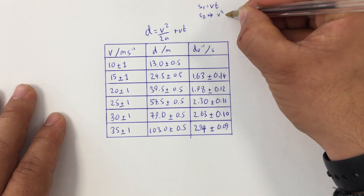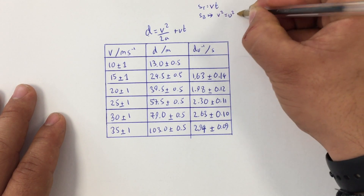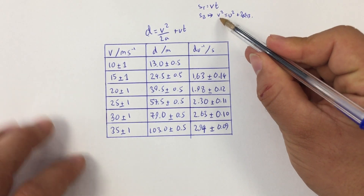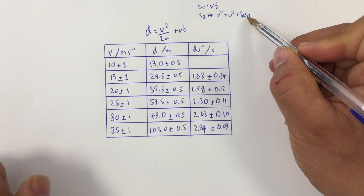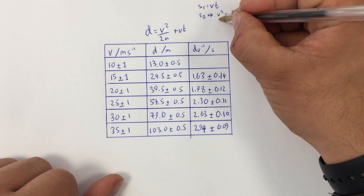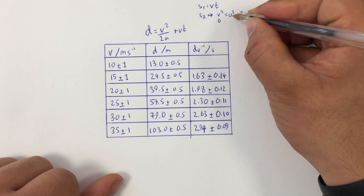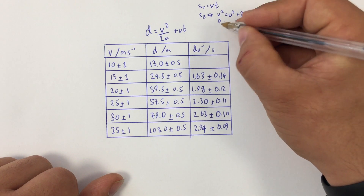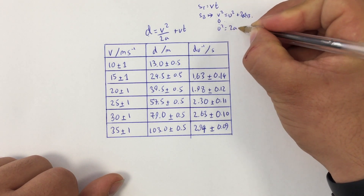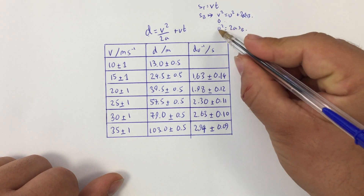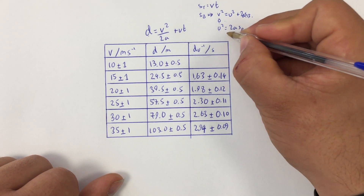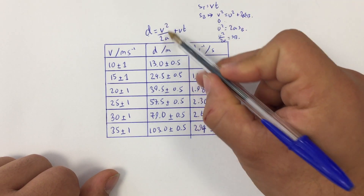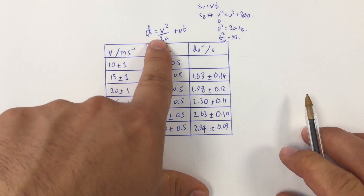I'm going to show you where this comes from in full. This is our SUVAT equation: v squared equals u squared plus 2as. Here s is our braking distance. We know that our final speed is zero, so u squared equals 2as. Rearranging gives u squared over 2a equals the braking distance. That's where this expression comes from.